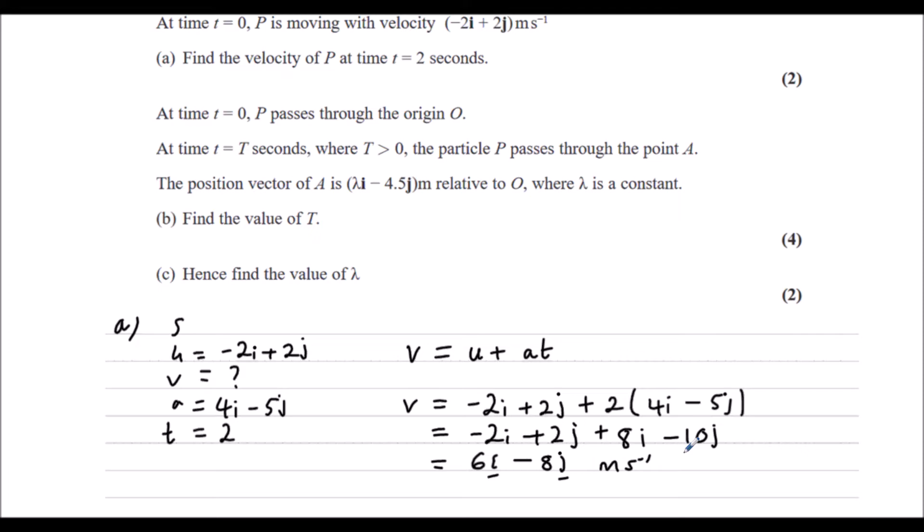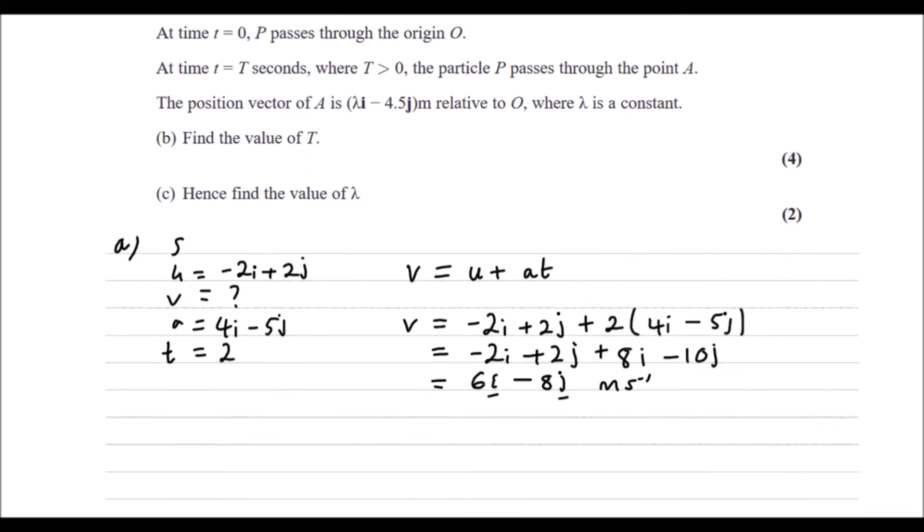At time t equals 0, P passes through the origin O, so displacement is 0. At time t equals T seconds, where T is bigger than 0, the particle passes through A. The position vector of A is lambda i minus 4.5j meters relative to the origin, where lambda is a constant. Find the value of T.